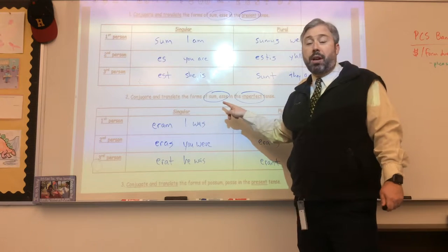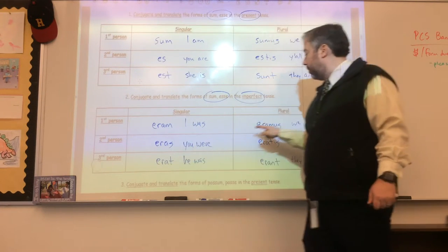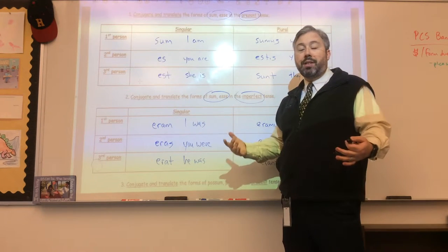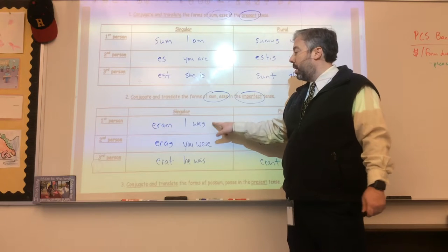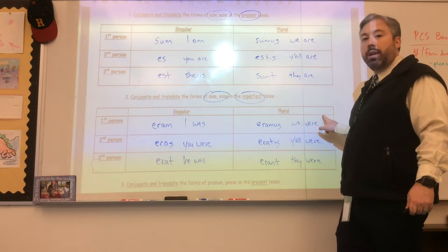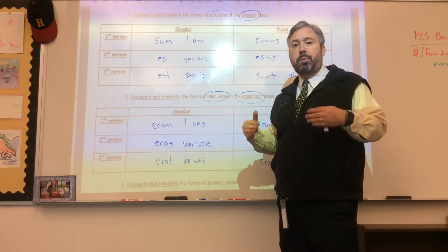The imperfect forms of to be, the past tense we know are eram, eras, erat, eramus, eratis, erant. And so therefore you also know the translations of those are I was, you were, he was, we were, y'all were, they were. And so that's the present and imperfect forms of to be.